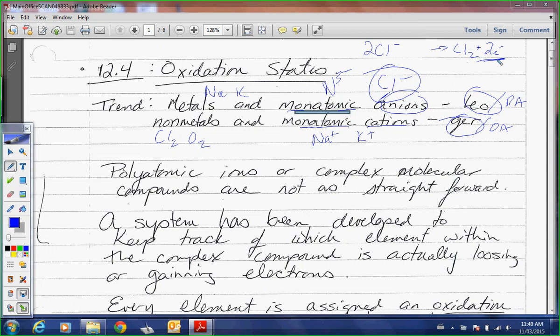Okay? So polyatomic ions, or complex molecular compounds, are not as straightforward. So for example, SO4 2- or actually, MnO4-. Could you do that one on your own? Could you make your own redox half reaction for MnO4- and H+? But let's say you weren't allowed to have your data booklet. Would you be able to make it up on your own? Not yet.